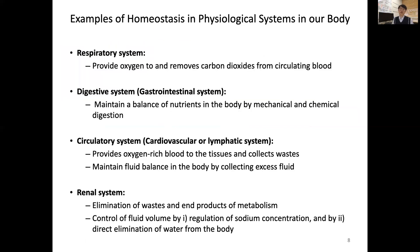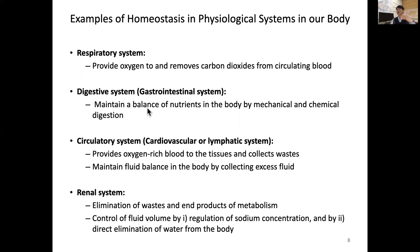All of this describes homeostasis in physiological systems in our body. We consider about four physiological systems and discuss their homeostasis. The respiratory system, through our lungs, provides oxygen to the circulating blood and removes carbon dioxide from blood to the outside — so mass and material transfer happens in the respiratory system. The digestive system, or gastrointestinal tract, maintains a balance of nutrients in the body through mechanical and chemical digestion.